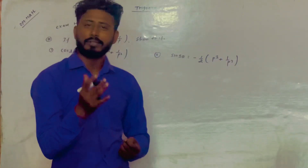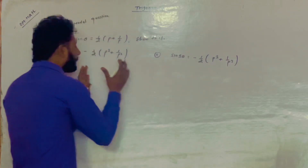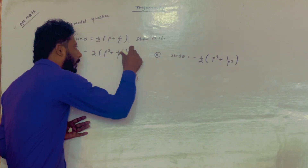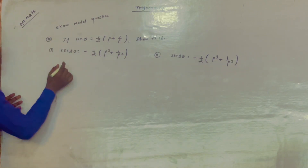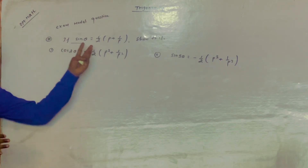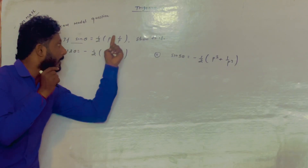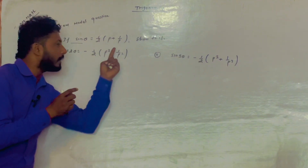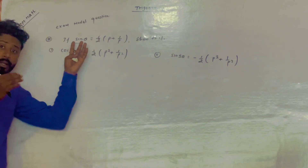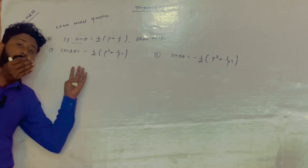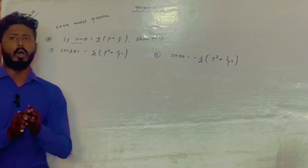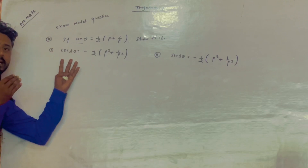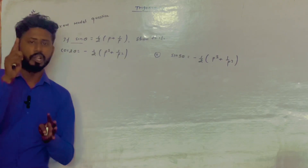This question is the same because, in the exam, I think we have sin theta value together: 1 by 2 bracket p plus 1 by p. So cos 2 theta is proved as minus 1 by 2, p squared plus 1 by p squared. If sin theta value is given, we prove cos theta — meaning cos 2 theta. So you can apply a sine formula here, because we have taken the sine line.